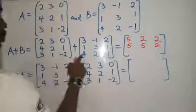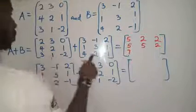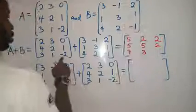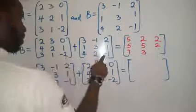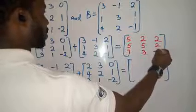Then we have 3 plus 4, 7. 1 plus 2, 3. Minus 2 plus minus, that will be minus 2 minus 1, minus 3.